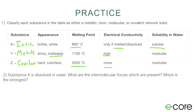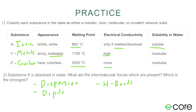Substance X is dissolved in water. What intermolecular forces are present and which is the strongest? Substance X is ionic. When dissolved in water, there are dispersion forces, dipole forces (since water is polar), and hydrogen bonding (since water has hydrogen bonds). But the new force introduced in this lesson is the ion-dipole force — formed when an ionic compound like substance X is mixed with water. The ion-dipole force is the strongest of our intermolecular forces.